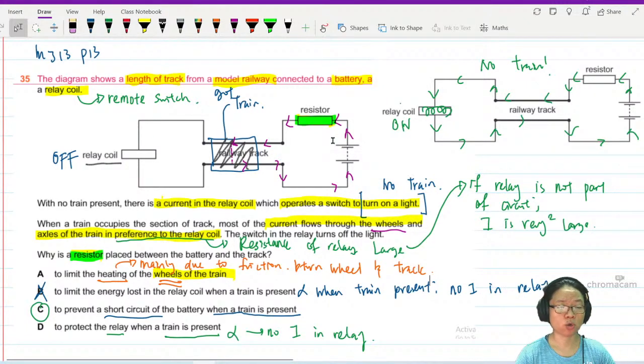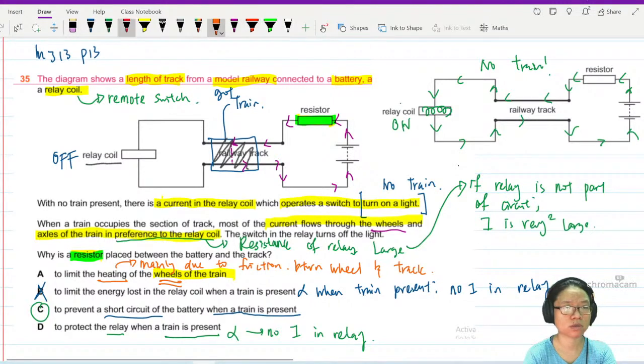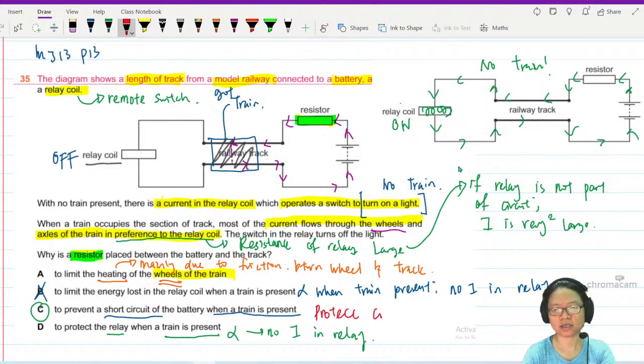You take it away, this current will become very very big. So basically, essentially we want option D, which is to protect the circuit from large current.